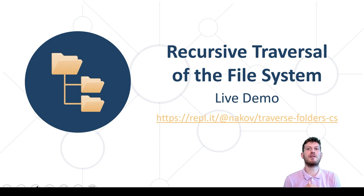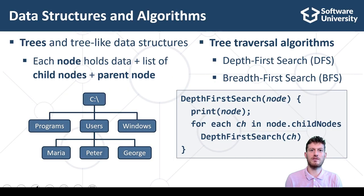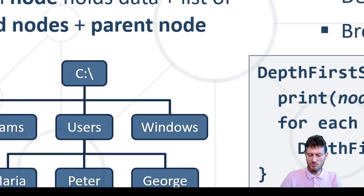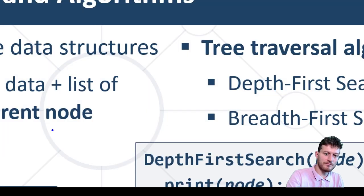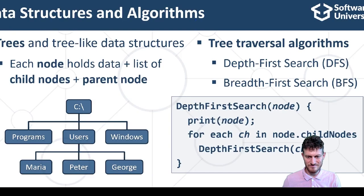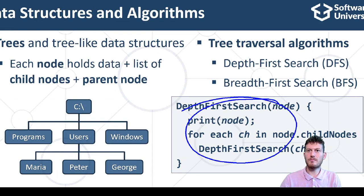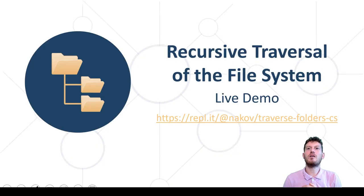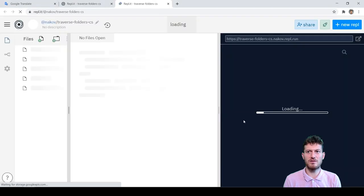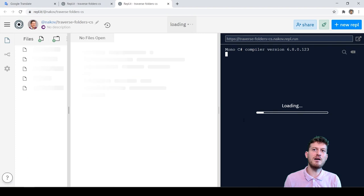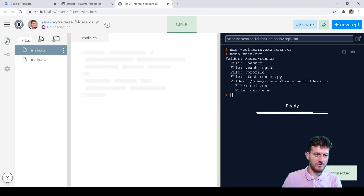This live example demonstrates the tree traversal algorithm depth-first search, DFS, used to traverse the local file system. Let's see it in action. We open the live code example at repl.it.